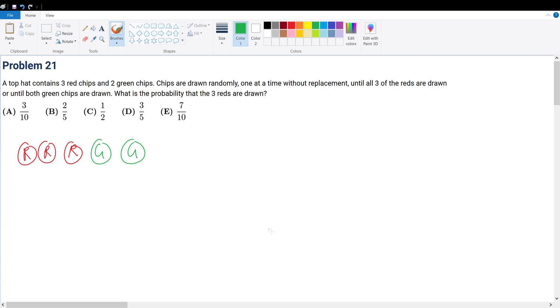Problem 21. A top hat contains three red chips and two green chips. Chips are drawn randomly, one at a time without replacement, until all three of the reds are drawn or until both green chips are drawn. We are trying to find specifically the probability that the three reds are drawn.